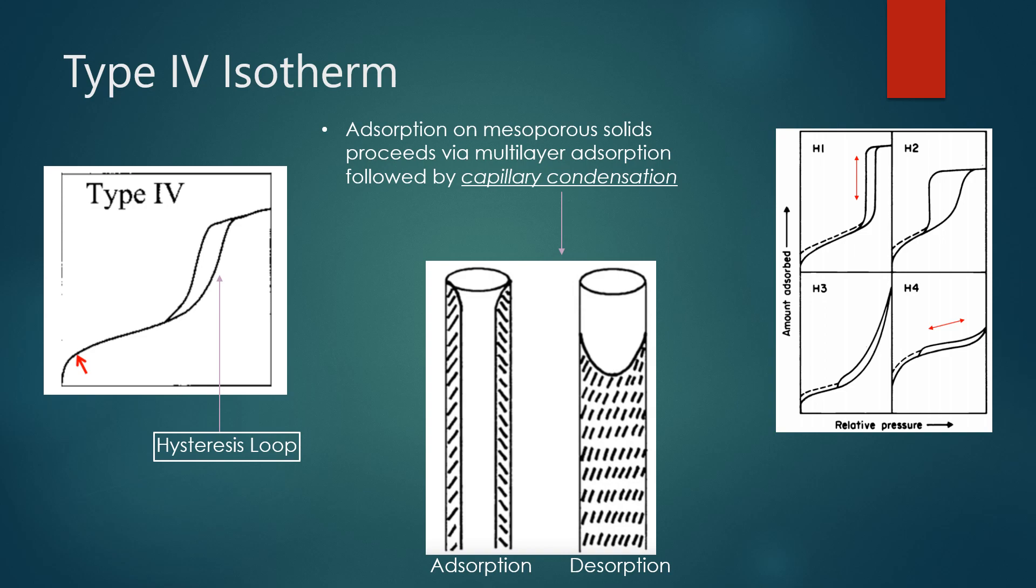Type 4 is where we see those hysteresis loops on the isotherms. This is due to capillary condensation. You can see in that picture in the middle there, the way that molecules adsorb onto a surface is different than the way that they desorb from a surface. You can gather that those isotherms will have slightly different plots as they adsorb and desorb, which is where you get that loop.